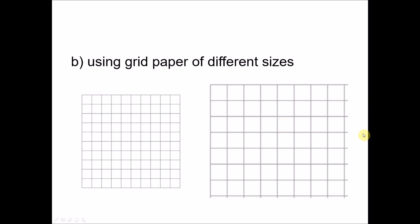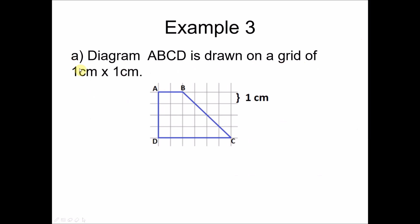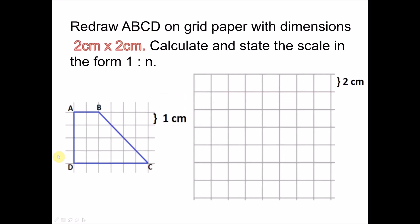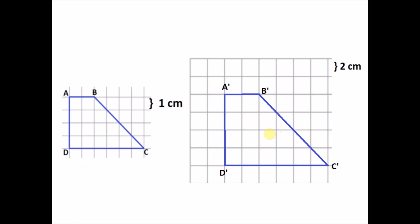Now, what happens when we draw using grid papers of different sizes? One grid is bigger, one is smaller. Example: diagram ABCD is drawn on a 1 cm × 1 cm grid. We redraw the object on a grid with dimensions 2 cm × 2 cm, which is a bigger grid. For this part, you look at the object, count how many units for each side, then draw that many units on the new grid.